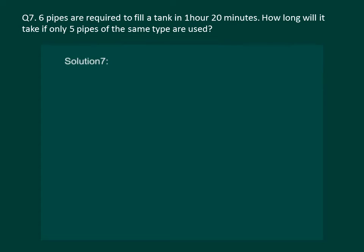Let us denote number of pipes by x and time taken to fill the tank by y minutes and try and construct a table between the number of pipes and the time taken in terms of minutes.